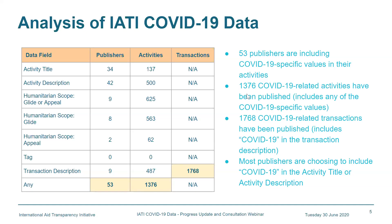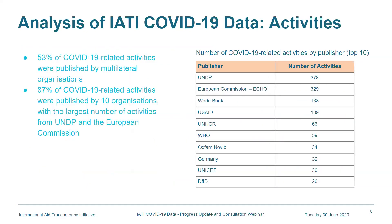Taking a closer look at the 1,376 activities published: more than half were published by multilateral organizations, and 87 percent were published by the top 10 organizations listed in the table. This gives a sense of the top 10 in terms of number of activities. It's important to keep in mind that each publisher defines 'activity' differently, so numbers may appear larger than expected.